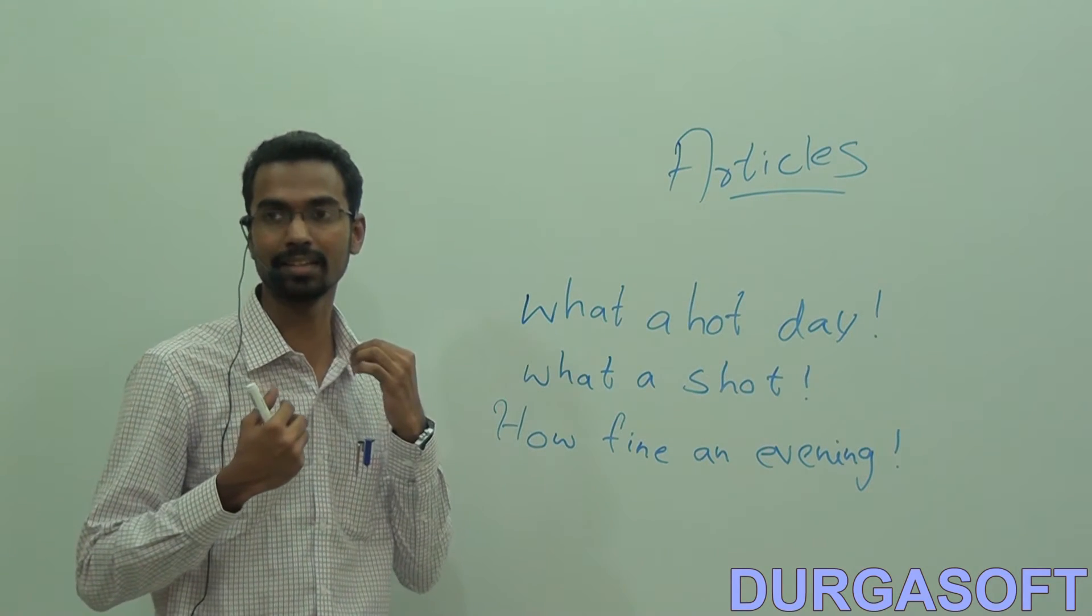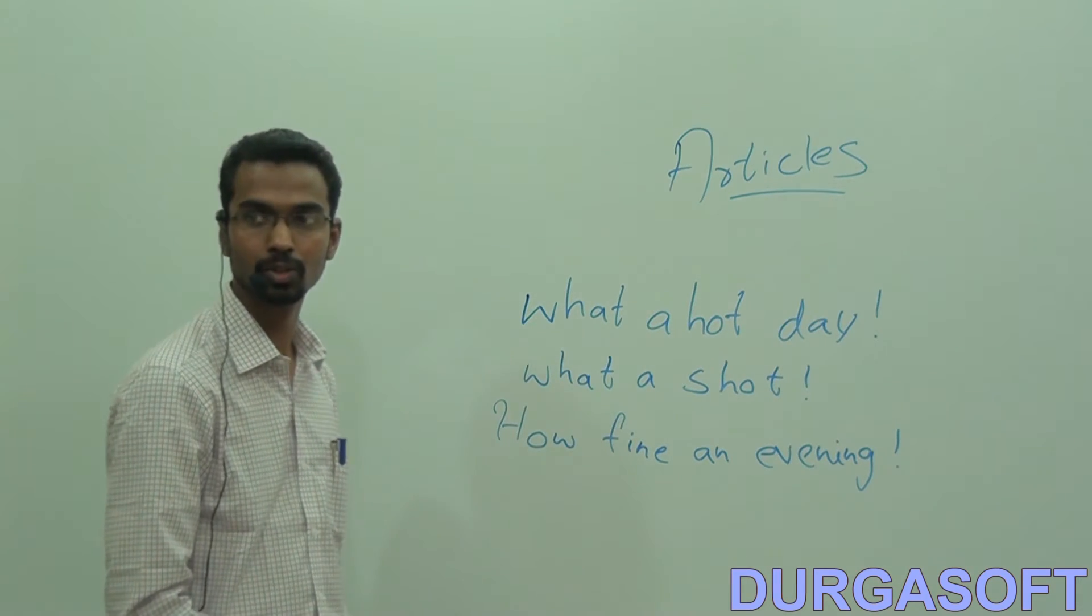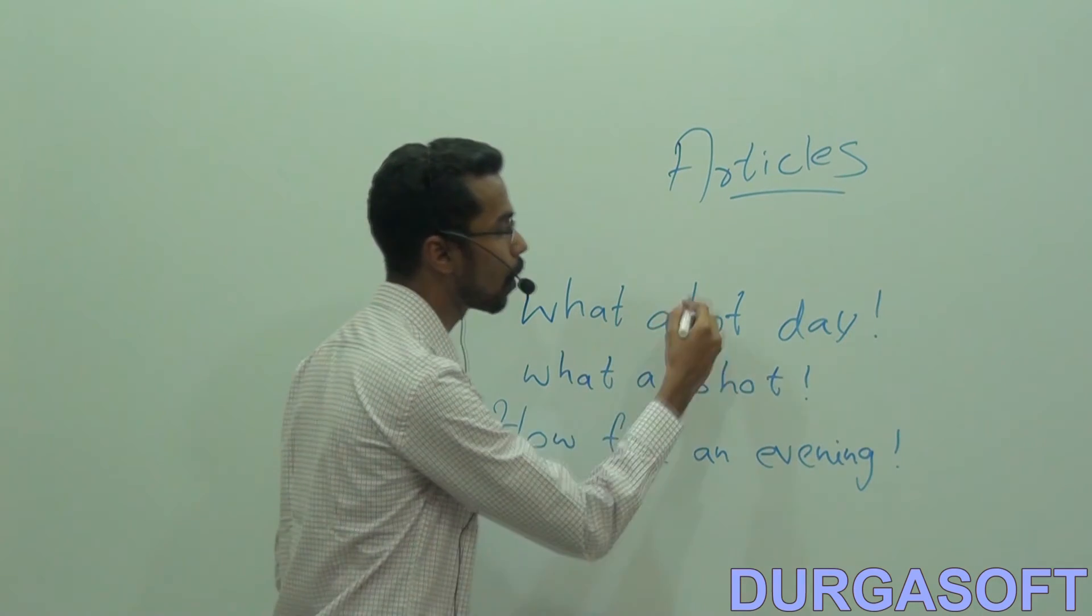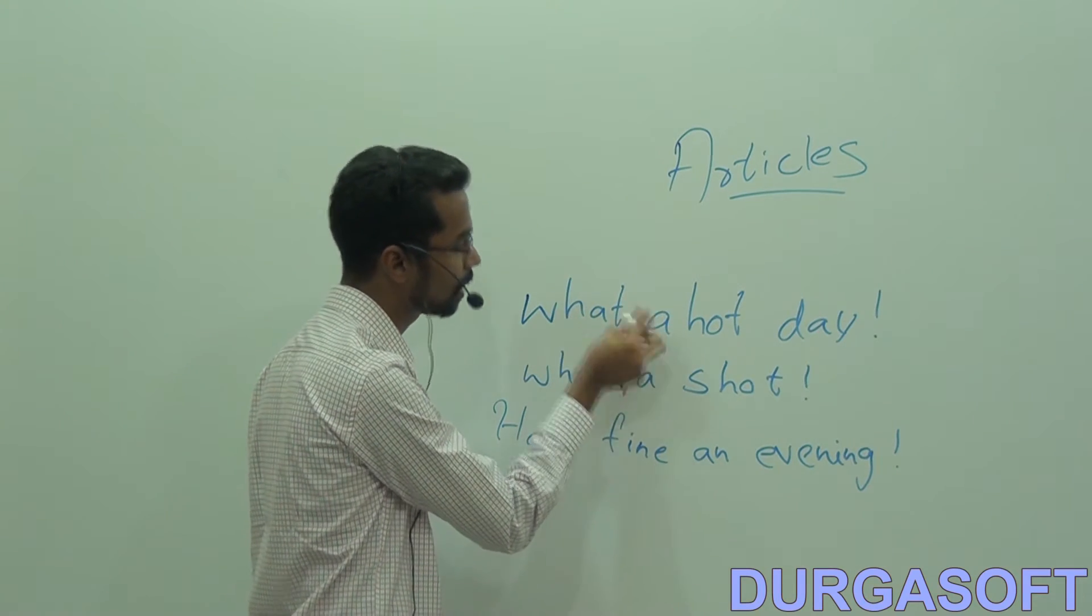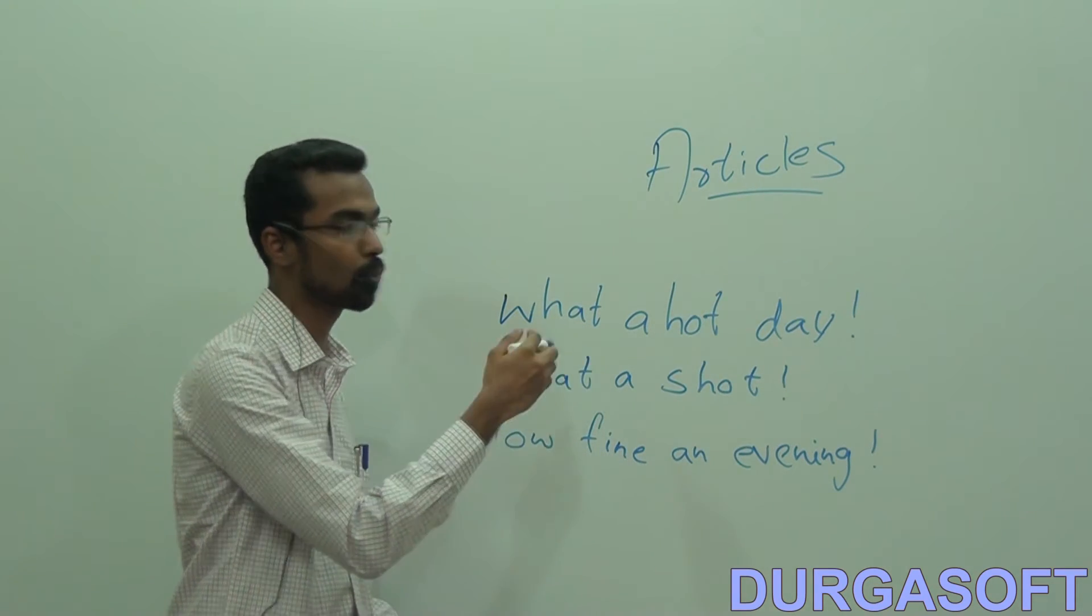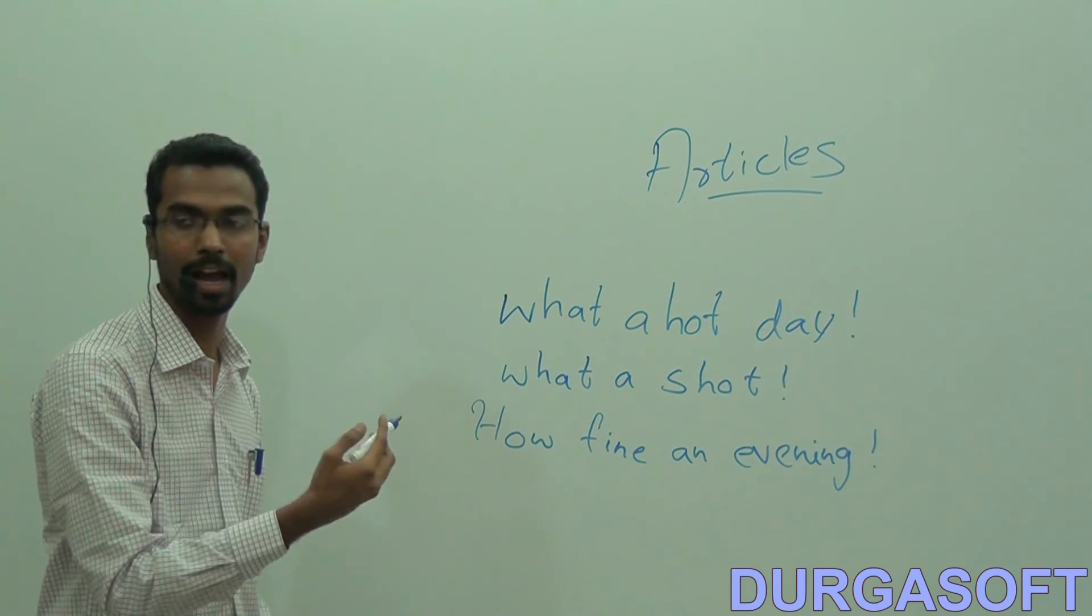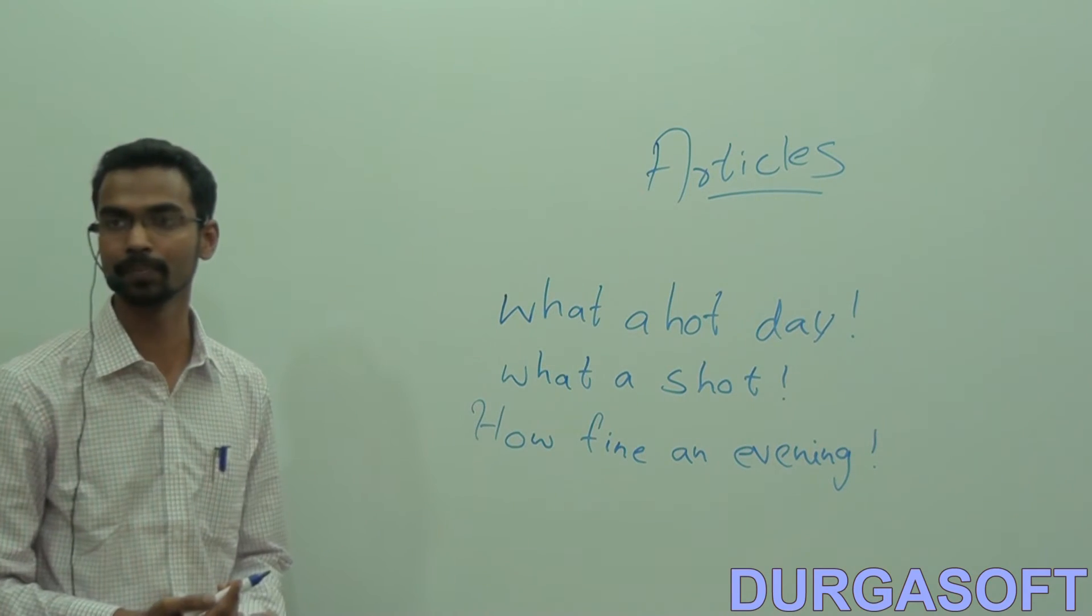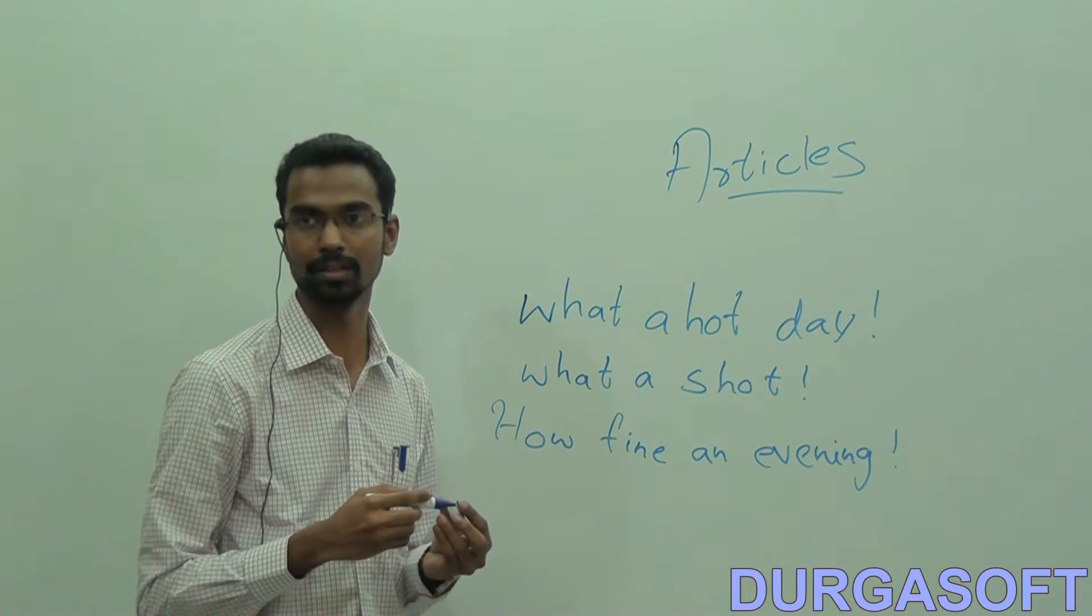So in all these sentences, you are expressing a certain spurt of some particular emotion. So these sentences are self-explanatory. When you say what a hot day, what you should pay attention to is the placement of article. Please see that I have written what a hot day and it is wrong to say what hot a day. Please don't make that mistake. If I pick up this article and put it here, the sentence would be wrong. So it is what a hot day and not what hot a day. Similarly, what a shot. I am expressing amusement. And here, how fine an evening. So in all these sentences, what you should pay attention to is the placement of the article.